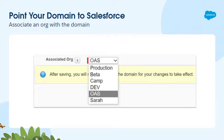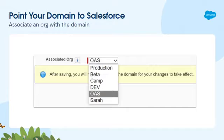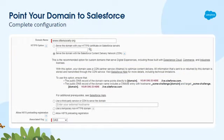The last step of adding a domain to your Salesforce org is associating it with the org that has your site in it. I'm setting this up in my production org, but I want to associate this domain with my sandbox org — the OAS, the Otter Appreciation Society org — because that's where my Experience Cloud site is living. So here's the complete configuration: domain name www.ottersociety.org, served with the Salesforce CDN, CNAMEs added, and associated with the OAS org.